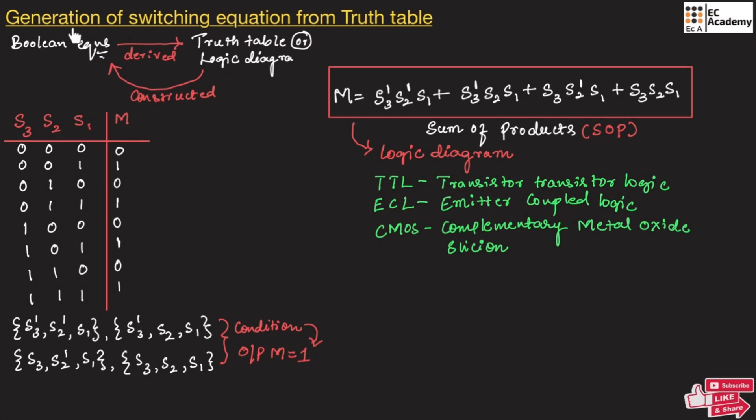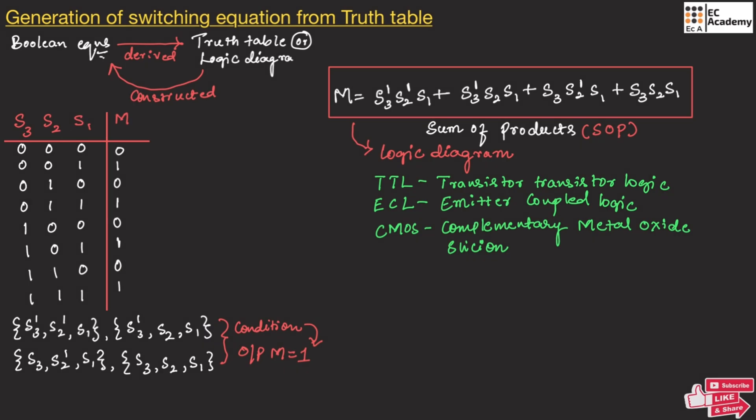This is about the generation of switching equations from a given truth table. Hope you have understood the topic. Thank you.